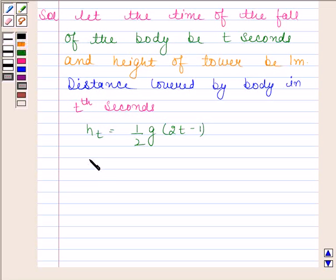We use the equation s equals ut plus half gt square. Now as the body falls freely from the top of the tower, this means initial velocity u is equal to 0. And we have assumed height of the tower as h meter. So the distance covered by the body is h meter.